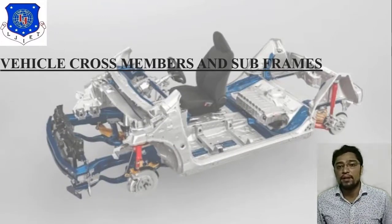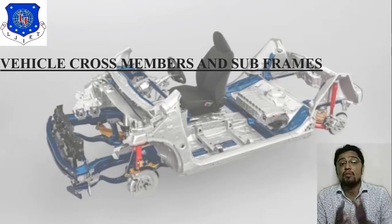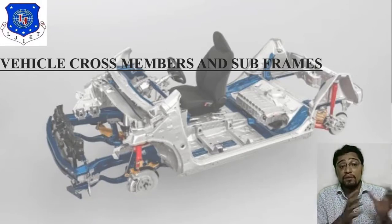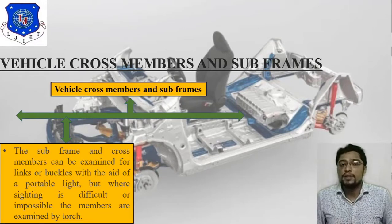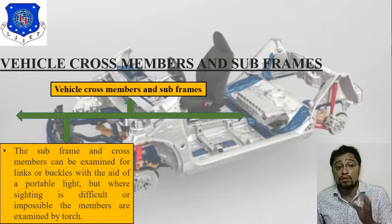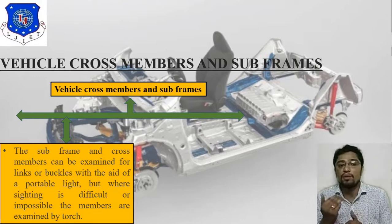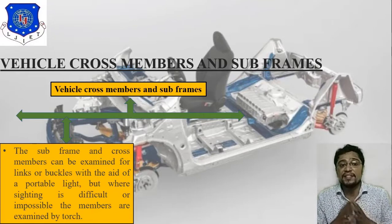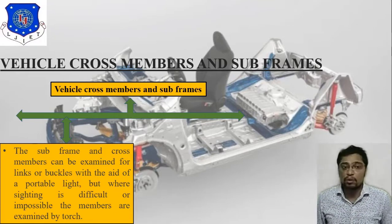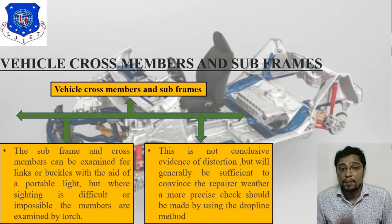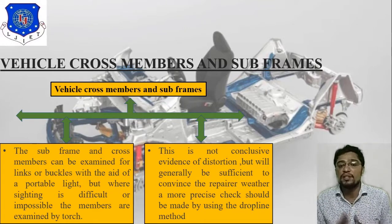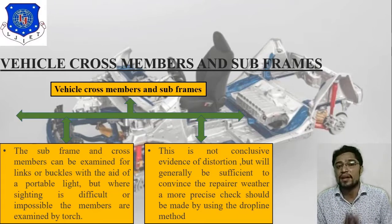Next is vehicle crossmember and subframe. There are different types of sections we can use. The subframe and crossmember can be examined for kinks or buckles with the ease of a portable light. Where sighting is difficult or impossible, the members are examined by torch. This is not conclusive evidence of distortion, but will generally be sufficient to convince the repairer whether a more precise check should be made using the drop line method.